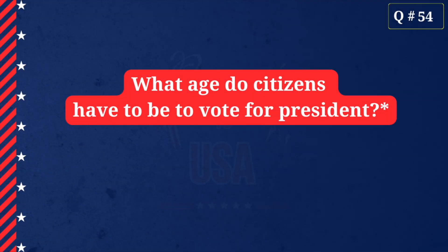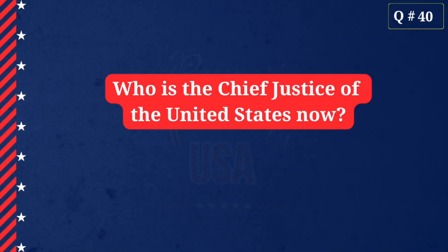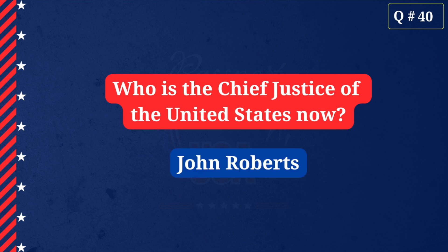What age do citizens have to be to vote for president? Eighteen. Who is the chief justice of the United States now? John Roberts.